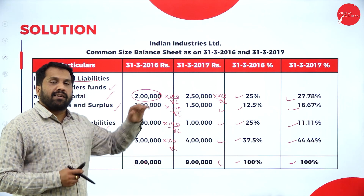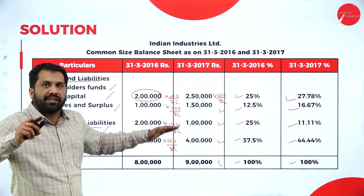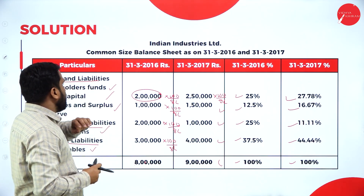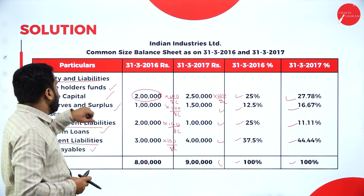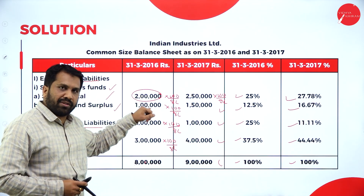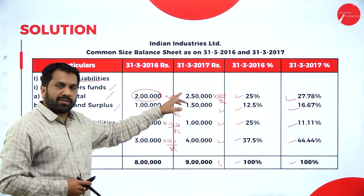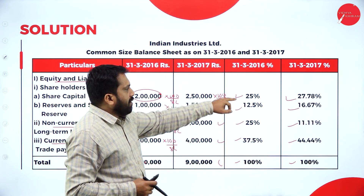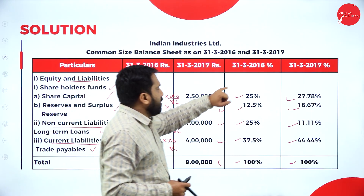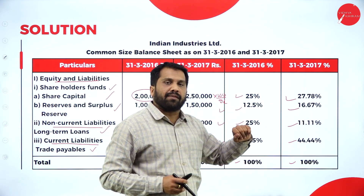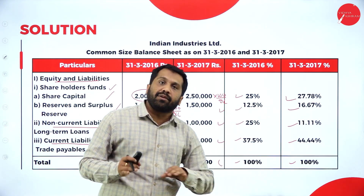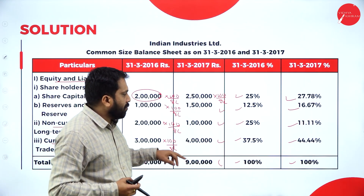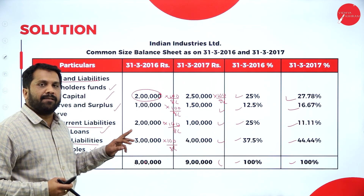In the question, if they ask to prepare a common size balance sheet with interpretation, simply write below: interpretation. Your share capital in 2016 was 2 lakh; in 2017 it is 2 lakh 50,000. There is a change in percentage of around 25% for 2016 and 27.78% for 2017. You are not comparing — you are writing what percentage each item represents compared to your overall total. Hope you are clear.